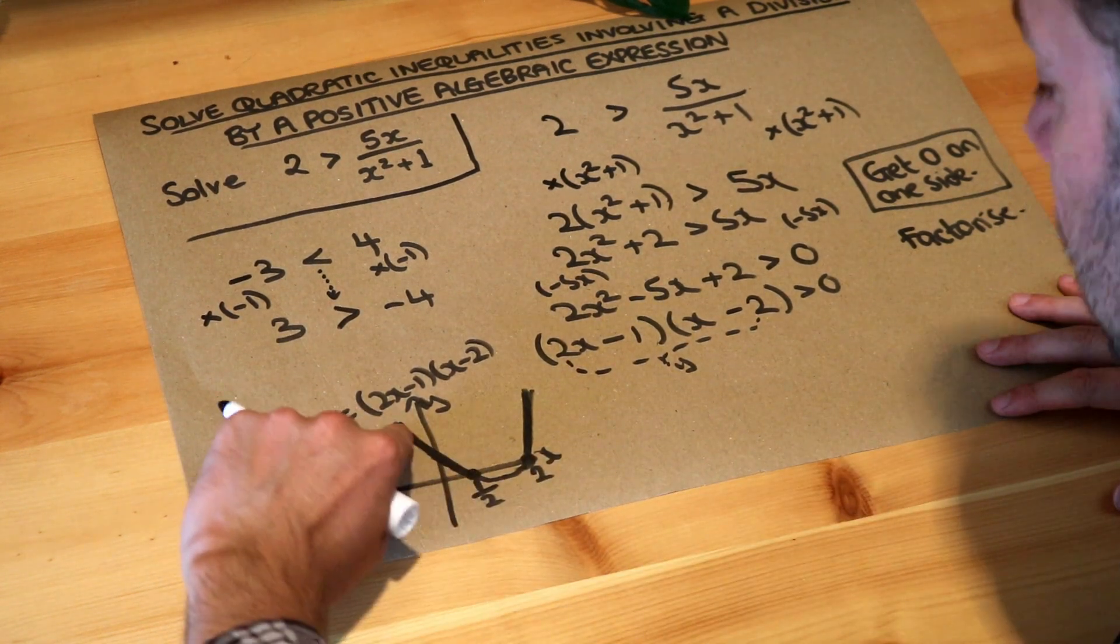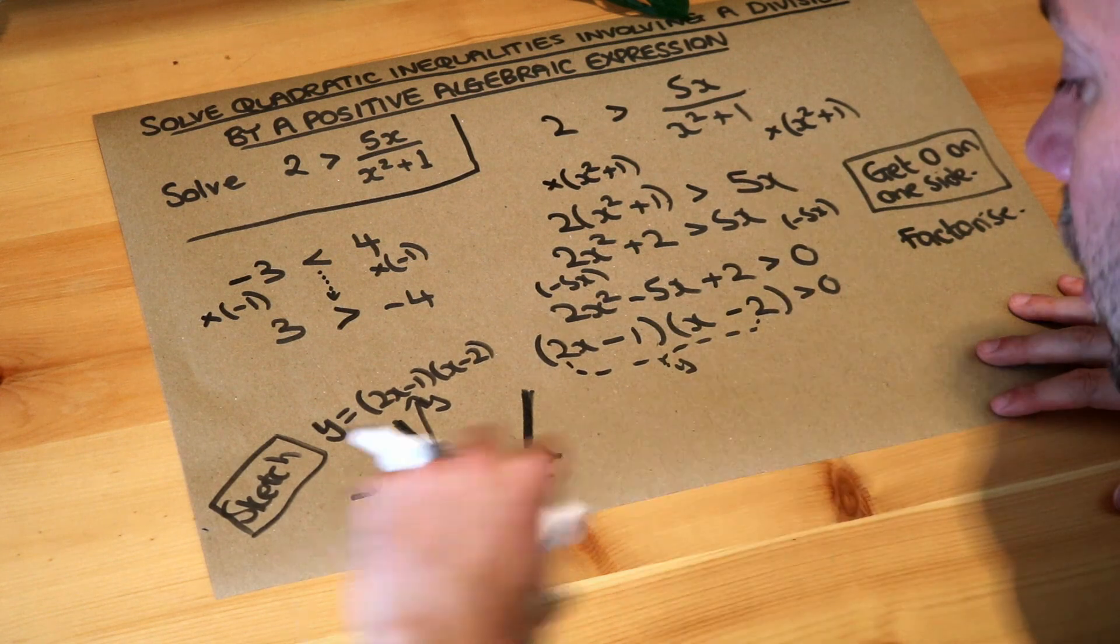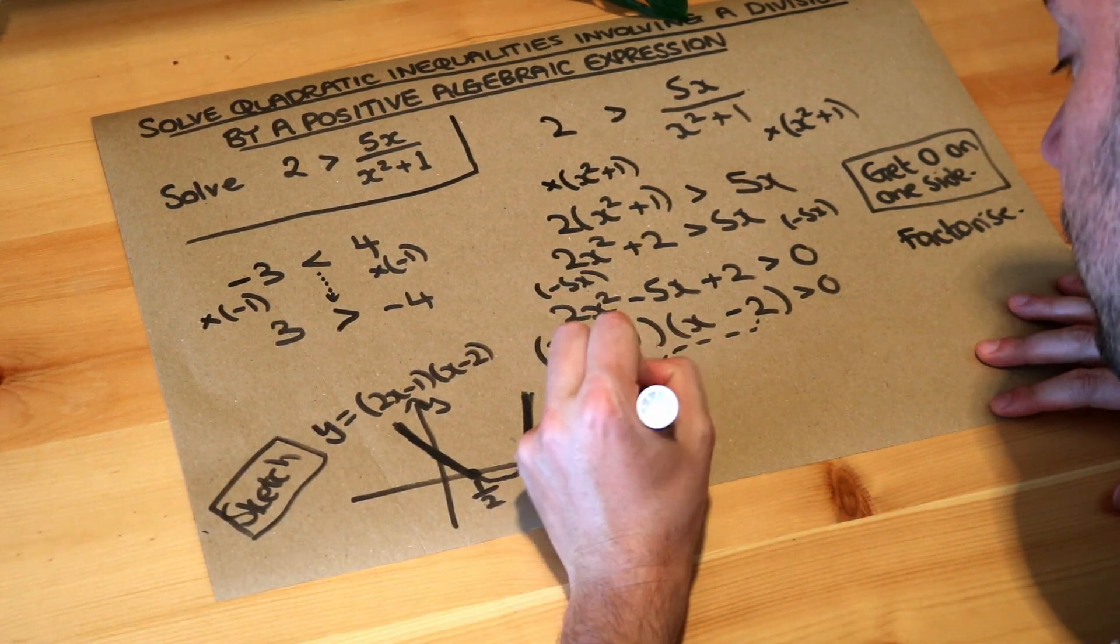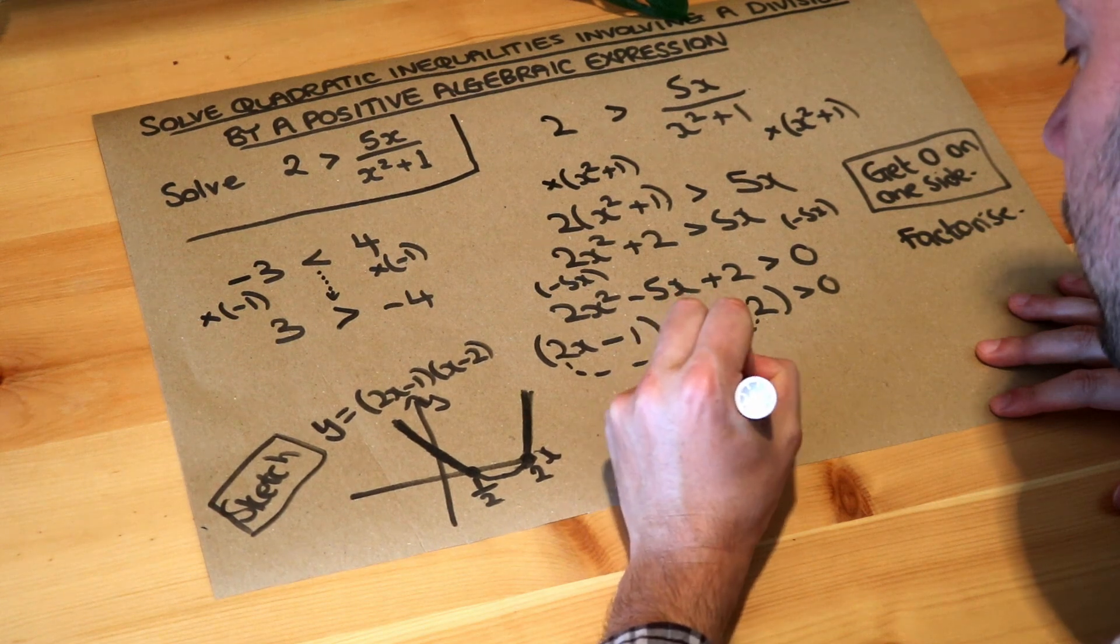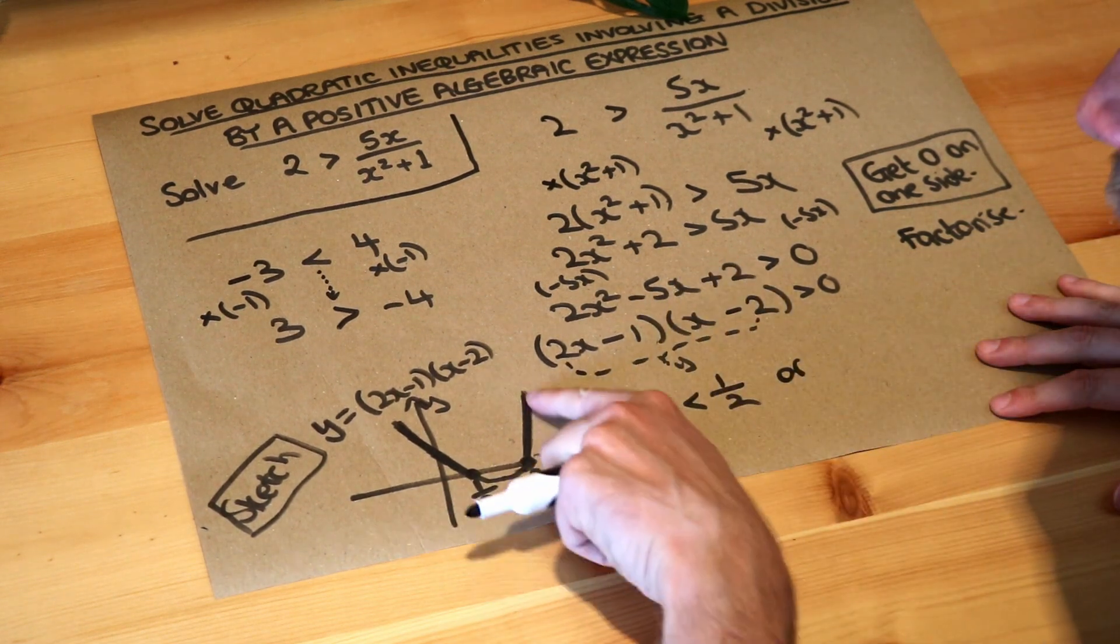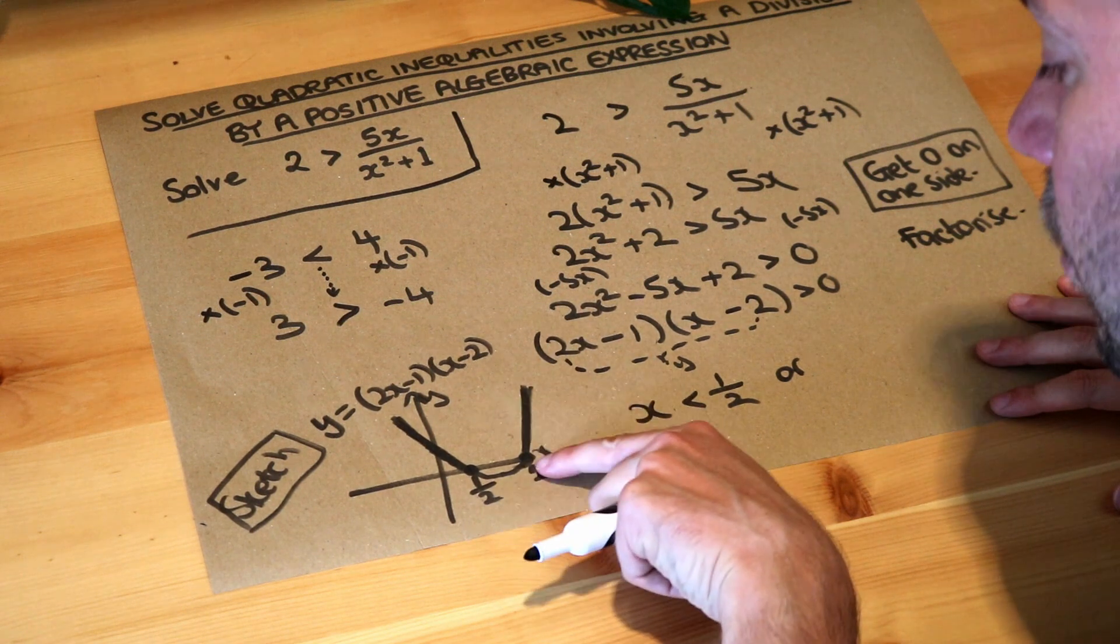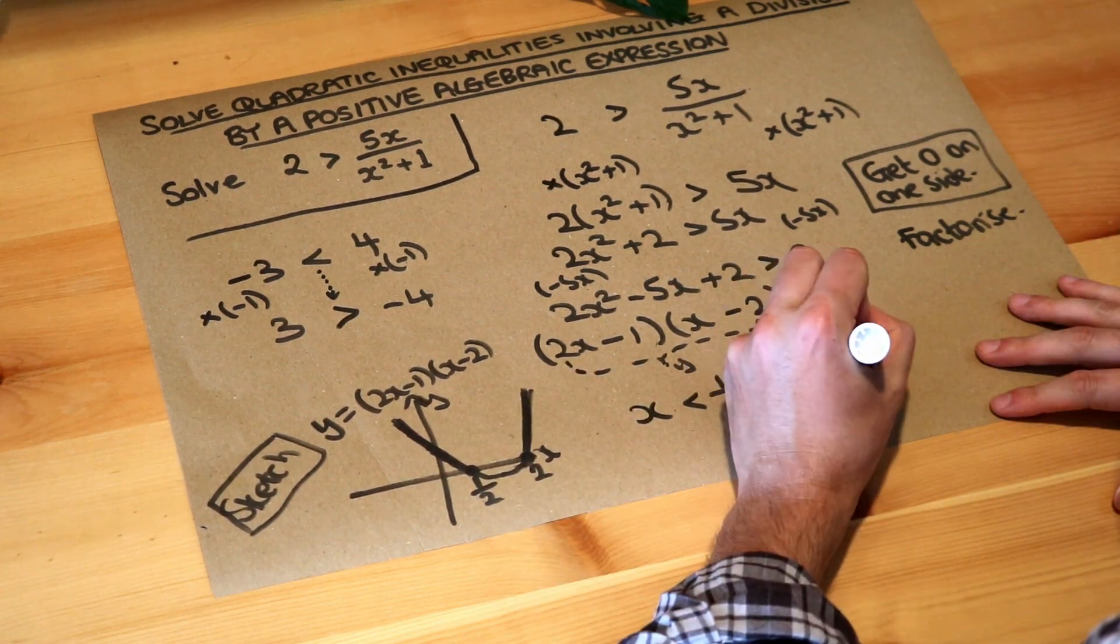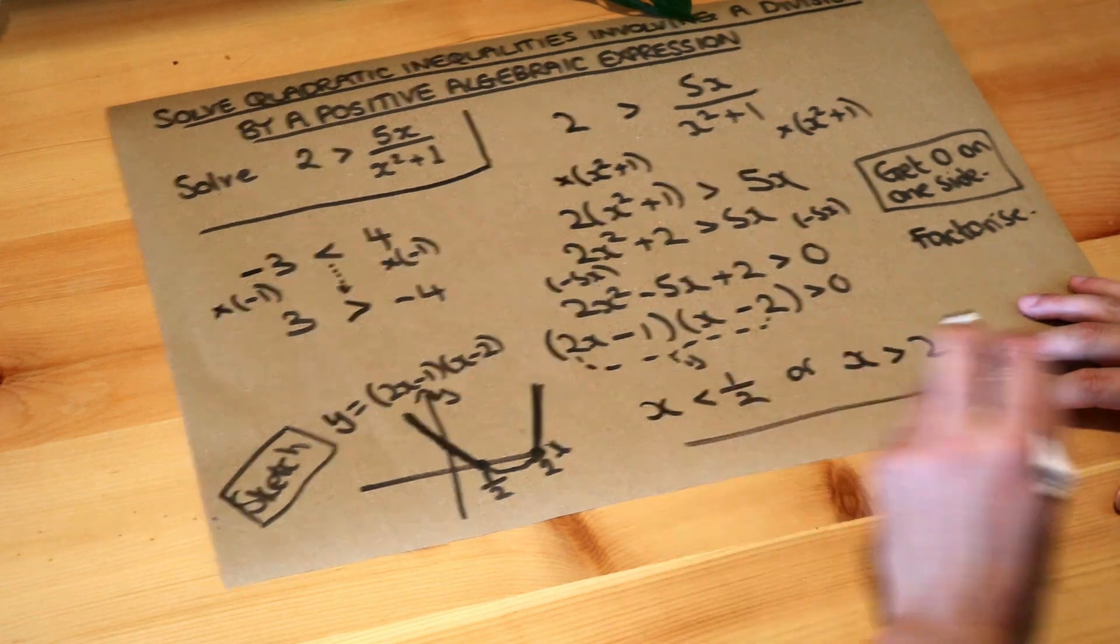So what can we say about this part of the line? Because we're trying to solve for x, aren't we? Any part of this line, the x value is less than half, so x value is less than half, or we're on this side of the graph, so the x value in any part of this graph here is greater than two, so x is greater than two, and that is the final answer.